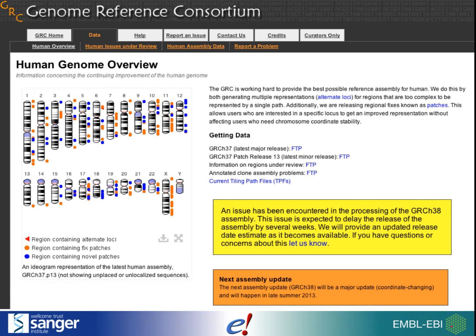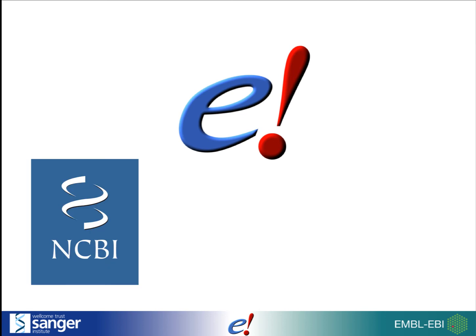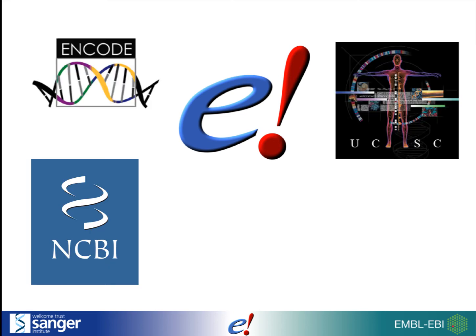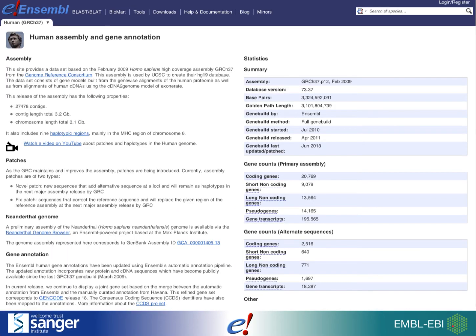Genome assemblies are not produced by Ensembl. We import them from other sources, such as the Genome Reference Consortium. This means that we are using the same genome assembly as other databases and projects, such as NCBI, UCSC, ENCODE and 1000 Genomes, amongst others. Ensembl provides details of the assembly used for each of its species.